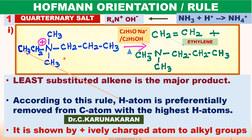There are actually three possibilities. CH3 cannot form an alkene. This group can form 1-butene, and this group can form ethylene. But ethylene is formed as the major product according to this rule, because ethylene is the least substituted alkene, whereas 1-butene is the highly substituted alkene. Therefore, ethylene is formed as the major product.